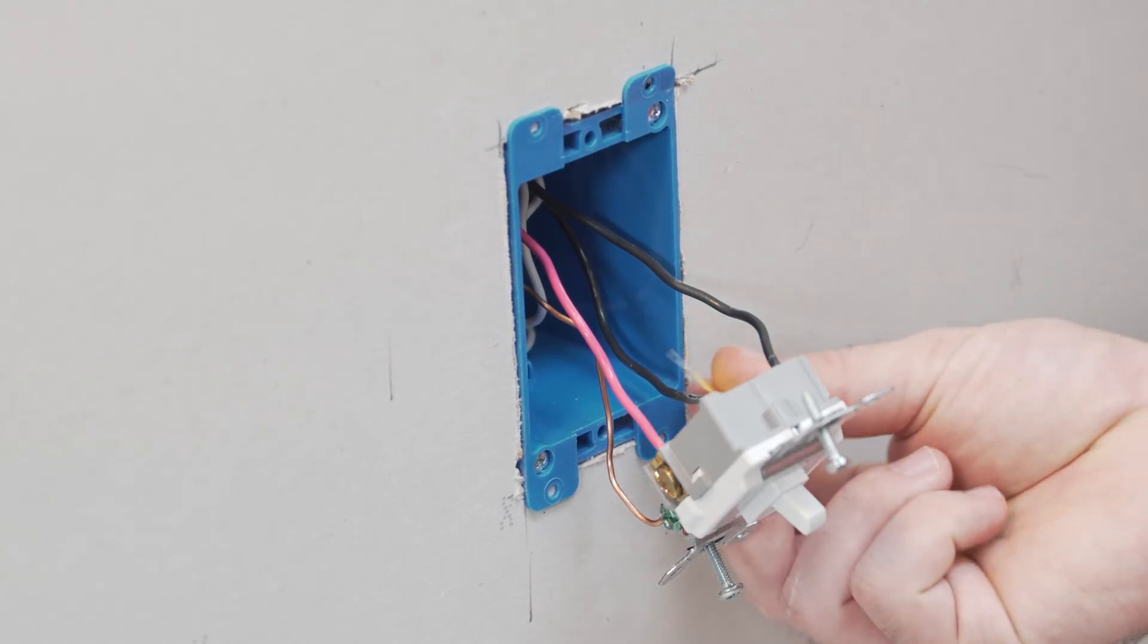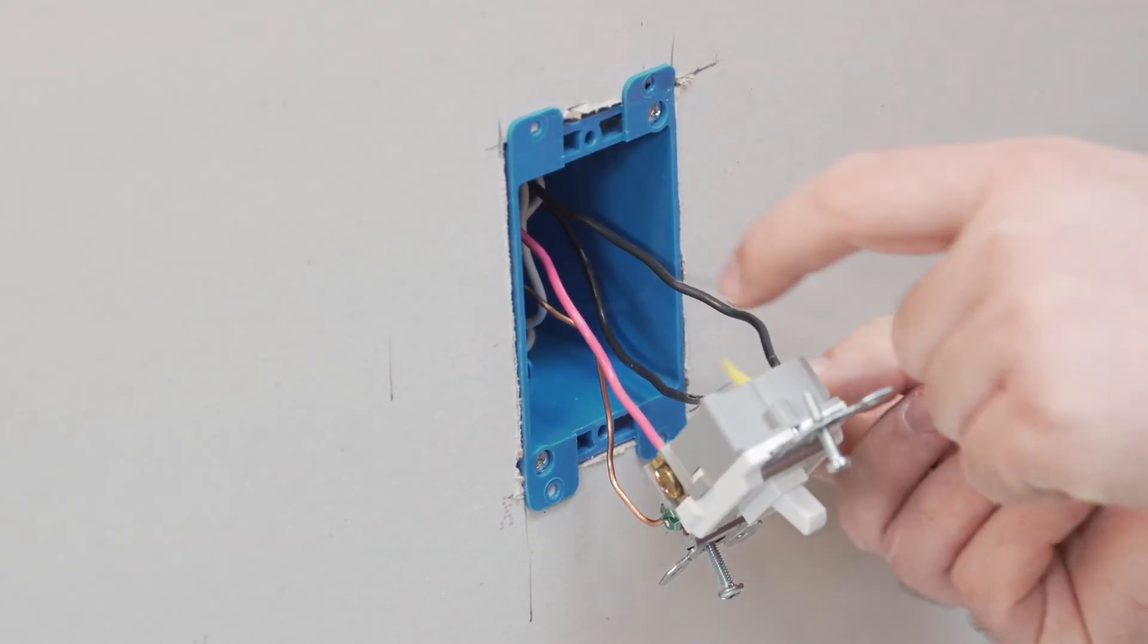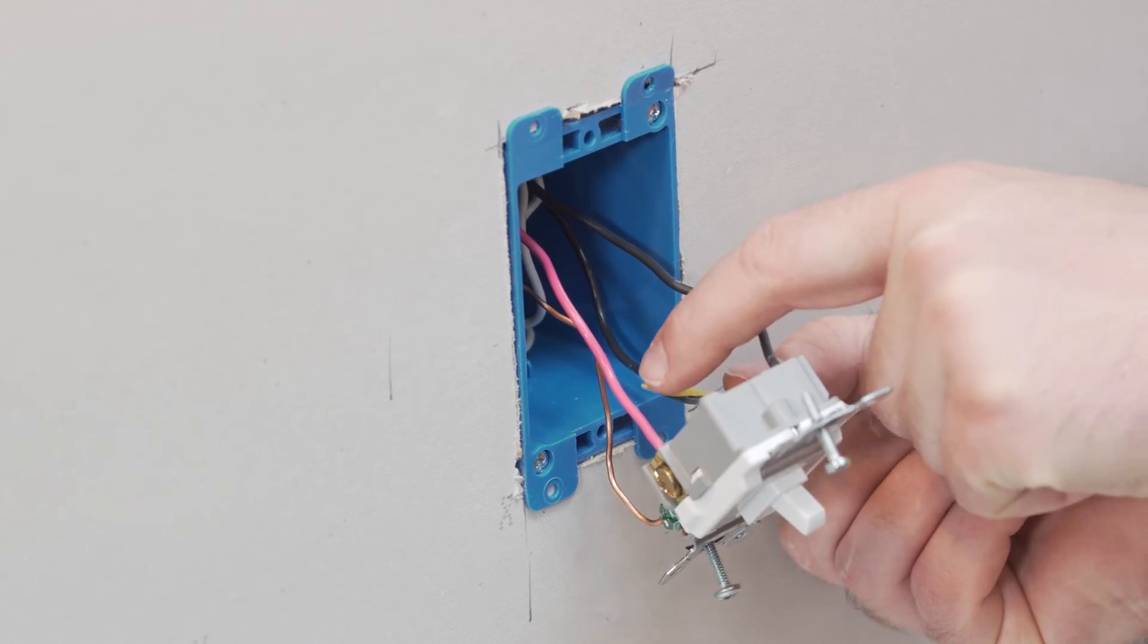Once you've identified that the common wire is coming from the circuit breaker, you'll want to use a method to mark it so you remember it for later which of the wires it is.